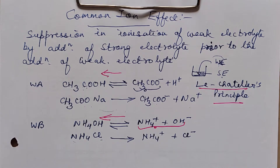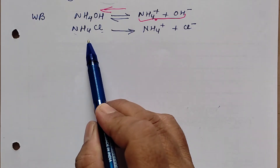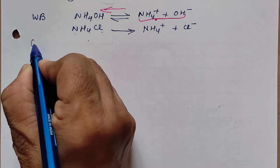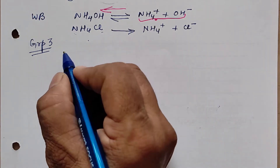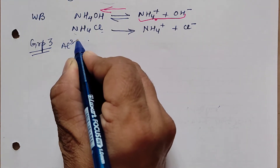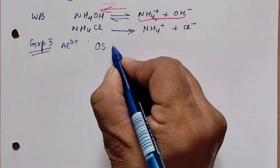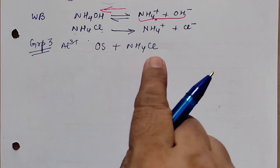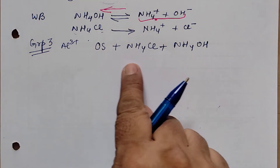This common ion effect has many applications in salt analysis performed in the lab. Consider the combination of ammonium hydroxide and ammonium chloride used in Group 3 cation analysis — for example, aluminium. We prepare the original salt solution, add ammonium chloride first (since it is the strong electrolyte), and then add ammonium hydroxide. This order must be followed — you cannot add ammonium hydroxide first.